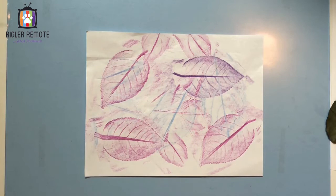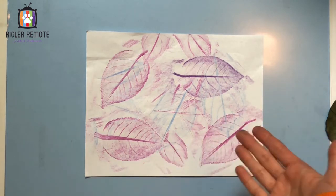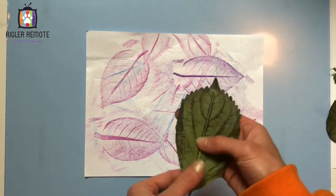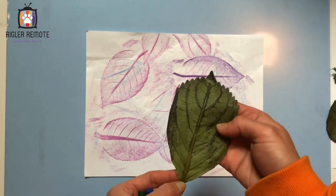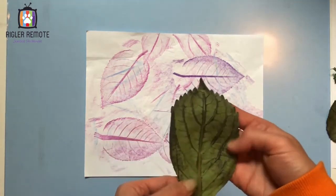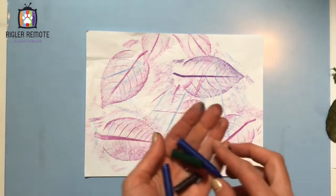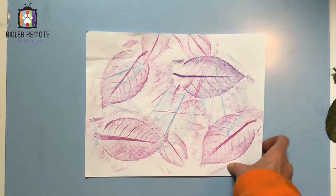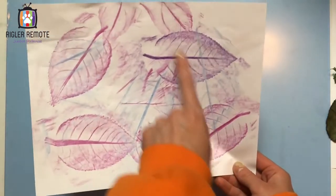So this means you're going over something that's raised. In this case, the leaves have raised veins and stem, which is going to create texture. And I'm going to use crayons to rub over the leaves. And then we will see the images appear.